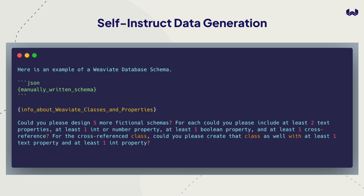We start by creating synthetic schemas for all sorts of fictional Weaviate use cases by prompting GPT-4. We give it an example of a Weaviate database schema in JSON, then give it information about Weaviate classes and properties — how classes are the atomic abstraction for some kind of object with associated properties like text, int, Boolean, and cross-references from classes to other classes, such as book has author, where author is another class.